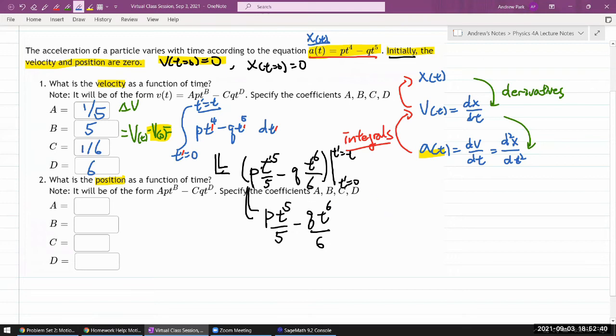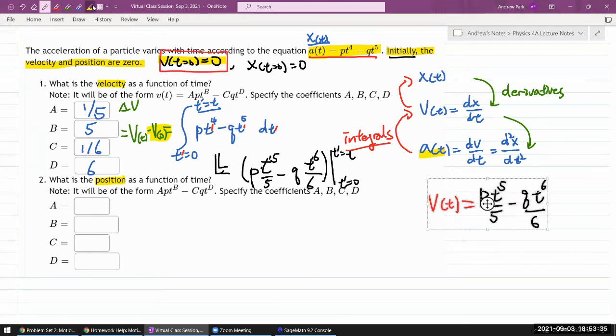So I think I need this result to do the part B, or second part. Let me just write this out. So this is my velocity as a function of time, taking into account that initially my velocity is zero. That's my velocity.